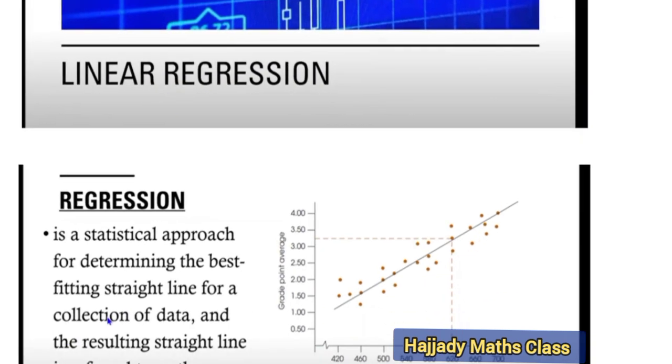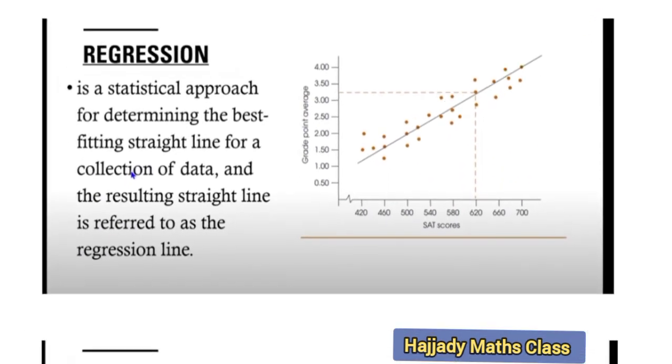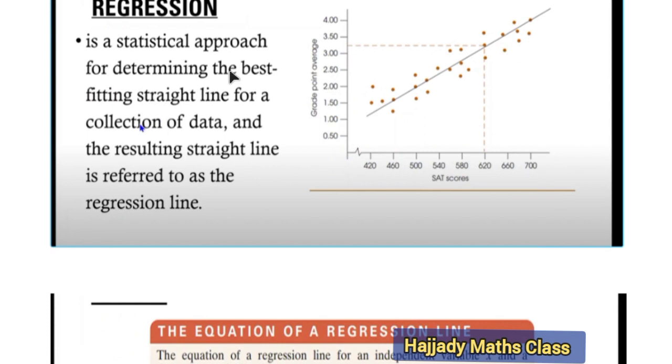When we talk about the word regression, regression is a statistical approach for determining the best fitting straight line for a collection of data, and the resulting straight line is referred to as the regression line.